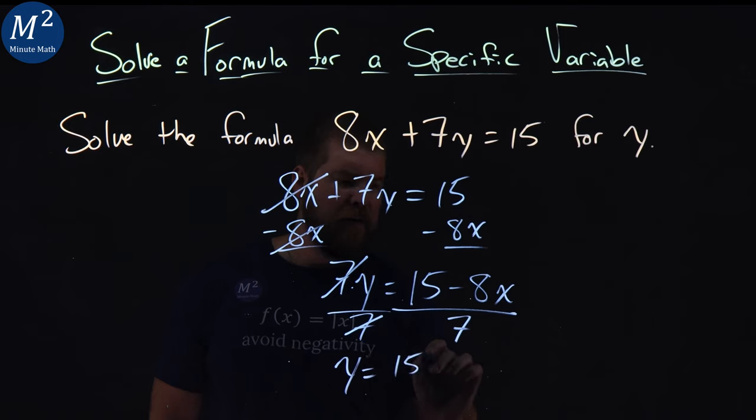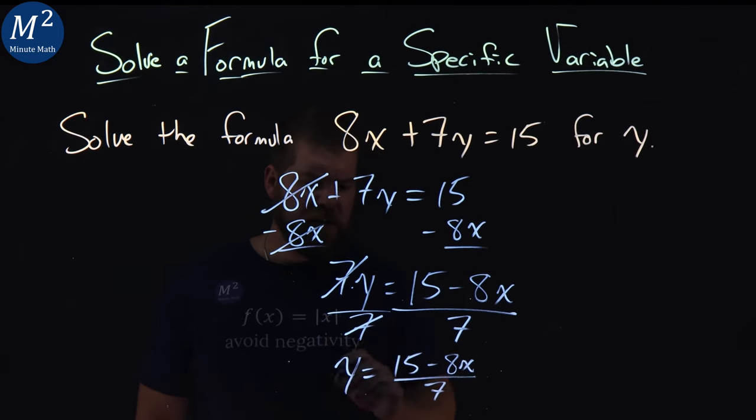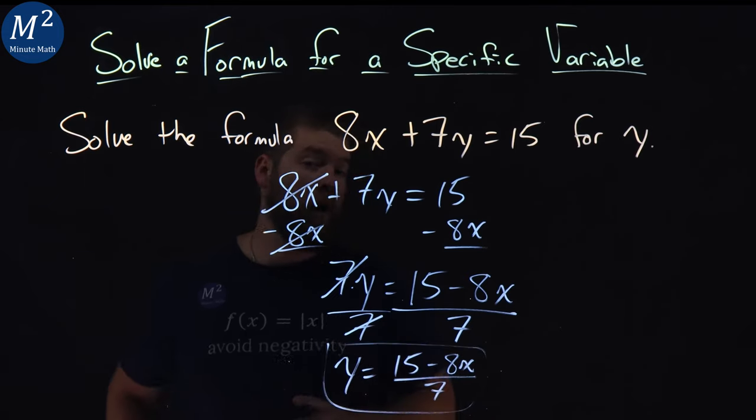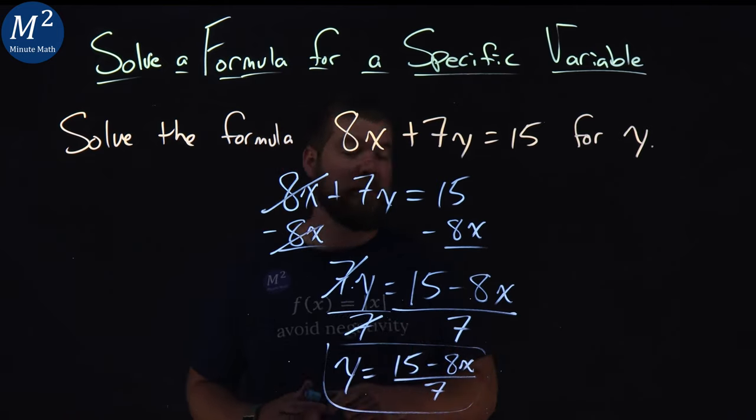On the right, we have 15 minus 8x over 7. And to be honest, this can't really simplify any more. That makes it any neater. So we have our answer here. We've gotten y by itself, and it's equal to 15 minus 8x over 7.